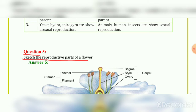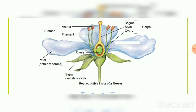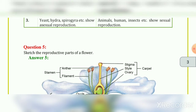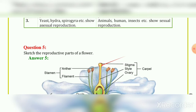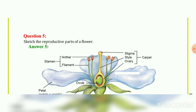Question 5: Draw a labelled sketch of the reproductive parts of a flower. In the figure we can see: stigma, style, and ovary - all three together are called the carpel. Then the anther and filament - both together are called the stamen.